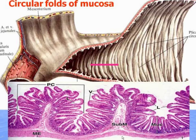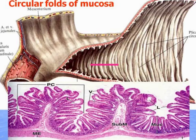In histological preparations under the microscope, you can see that these folds are composed of all four layers of the mucosa membrane, and villi and crypts are also available. The villi are finger-like extensions of the mucosa membrane that increase the surface of the intestine ten times.